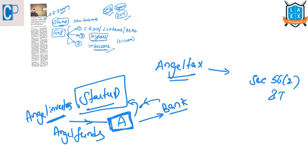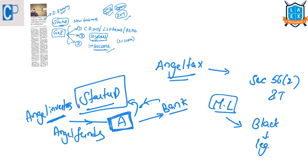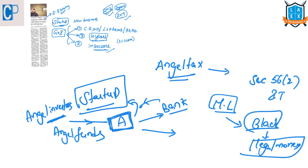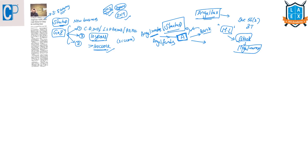So what is Angel Tax? According to Section 56, Clause 2 of the Income Tax Act, this Angel Tax will be imposed. It was mainly brought in to fight money laundering — the conversion of black money into legal money. For example, if Mr. A's friend has a lot of black money and wants to convert it into legal money by investing in Mr. A's business, Angel Tax was introduced to prevent this kind of money laundering.